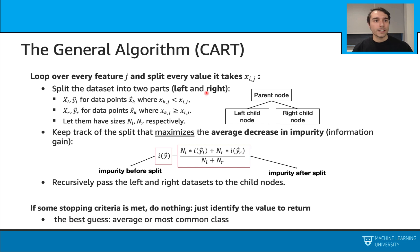Then we will split the dataset into two parts, left and right. We will call xl, yl as data points for the left child node, and xr, yr as data points for the right child node. And we will have these conditions for these splits. Let's also let them have sizes nl and nr, respectively.